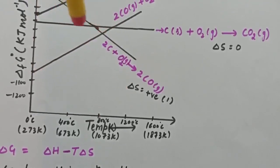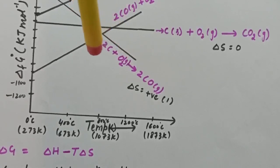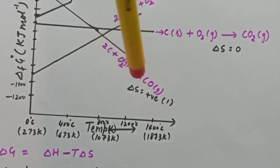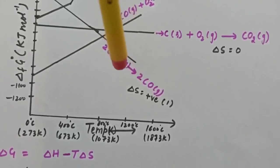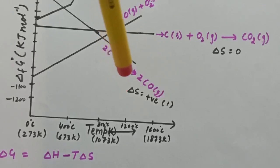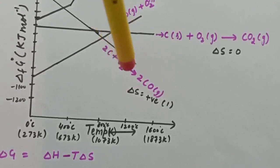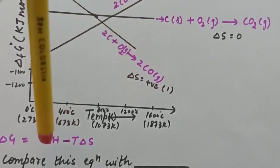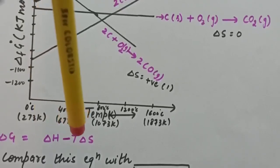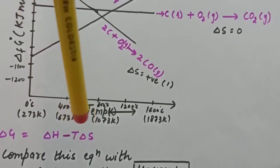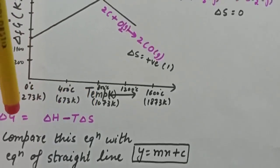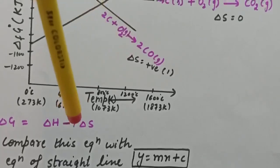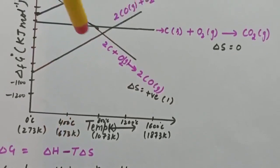For the reaction 2C + O₂ → 2CO, the number of product gas moles is 2 and reactant gas moles is 1, so ΔS = 2 − 1 = +1, meaning ΔS is positive. Comparing ΔG = ΔH − TΔS with the straight-line equation y = mx + c, the slope is −ΔS. Since ΔS is positive, the slope is negative — that is why this line goes in a downward direction.